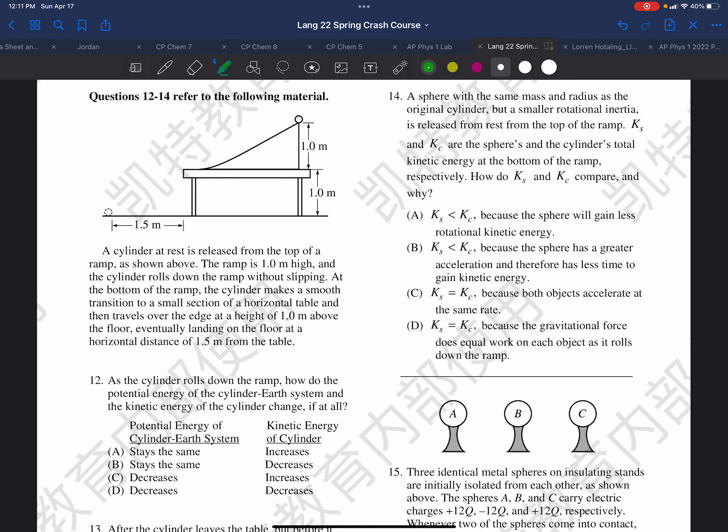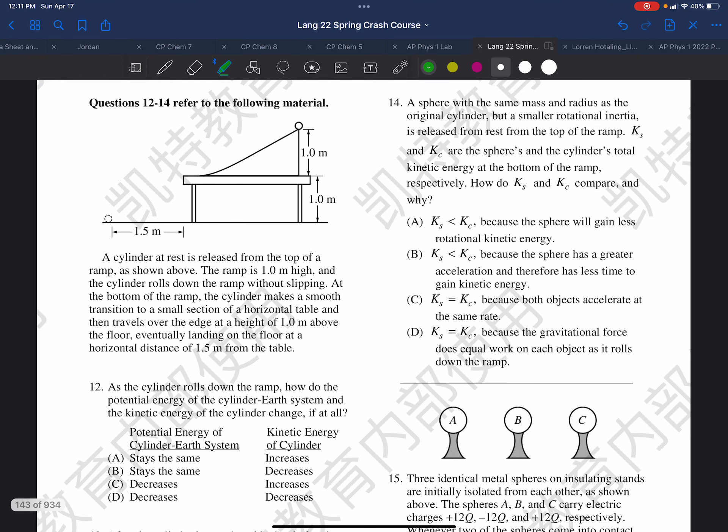In this question, we have a cylinder at rest. It rolls down this ramp, so we have that phase. Then it travels across a horizontal part of the table, and then it ends up on the floor like so.